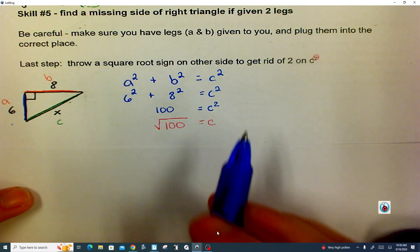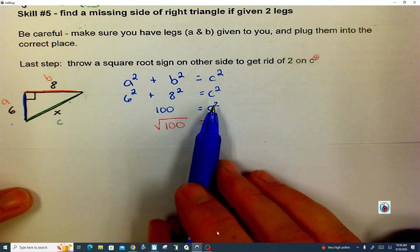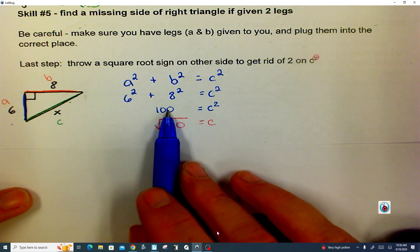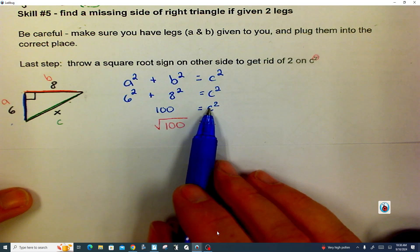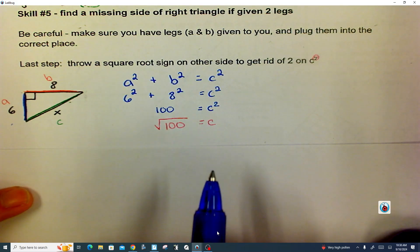Now you have to understand what's happening here. The C to the second power means a number times itself is 100, which we already know is 10, right? 10 times 10 is 100. That's why I chose this one.